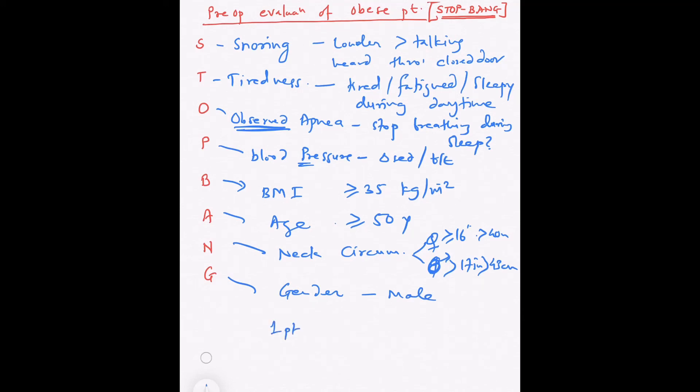If the total score is more than or equal to 3, it means patient has high risk for obstructive sleep apnea syndrome. If it is less than 3, then low risk of obstructive sleep apnea syndrome.